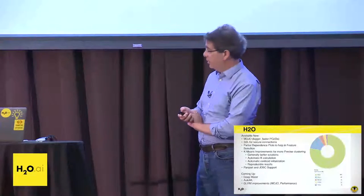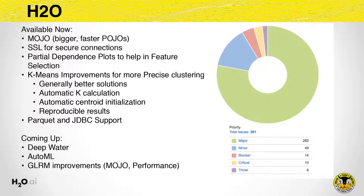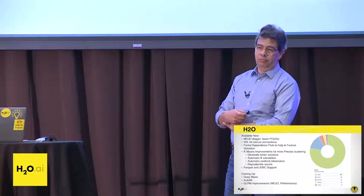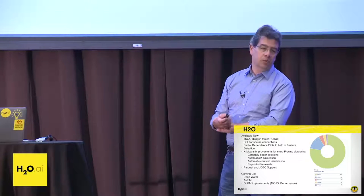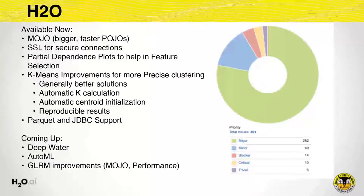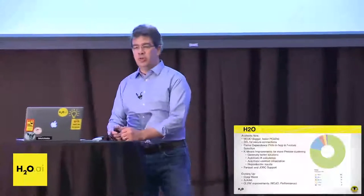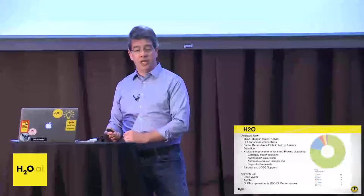Some of the really exciting stuff coming up: Deep Water — our own deep learning offering. AutoML — auto machine learning — Ray Pack is going to have a talk about that in the afternoon. Also some GLRM improvements: we're going to support the MOJO for GLRM, and we're improving the performance of GLRM training when you've got datasets with tens of thousands of columns. And as the guy in the engine room, I'm proud of what the team has done since we last met in New York — we've addressed 361 issues: 282 major, 49 minor, 14 blocker.